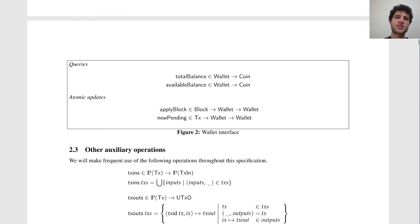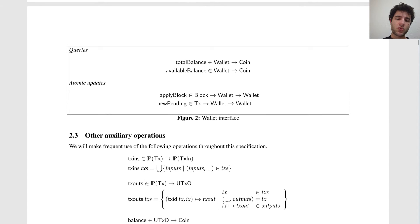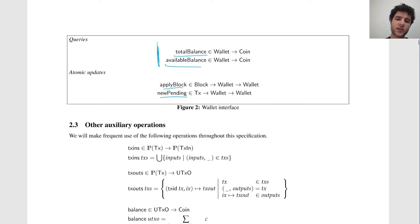So what is the simplest wallet interface you could have? We'll start building this up, and later in the presentation we'll add more complicated features for performance improvements. The interface to our wallet includes functions for calculating the balance — total balance and available balance, which I'll describe the difference between later — and two functions: apply block and new pending.